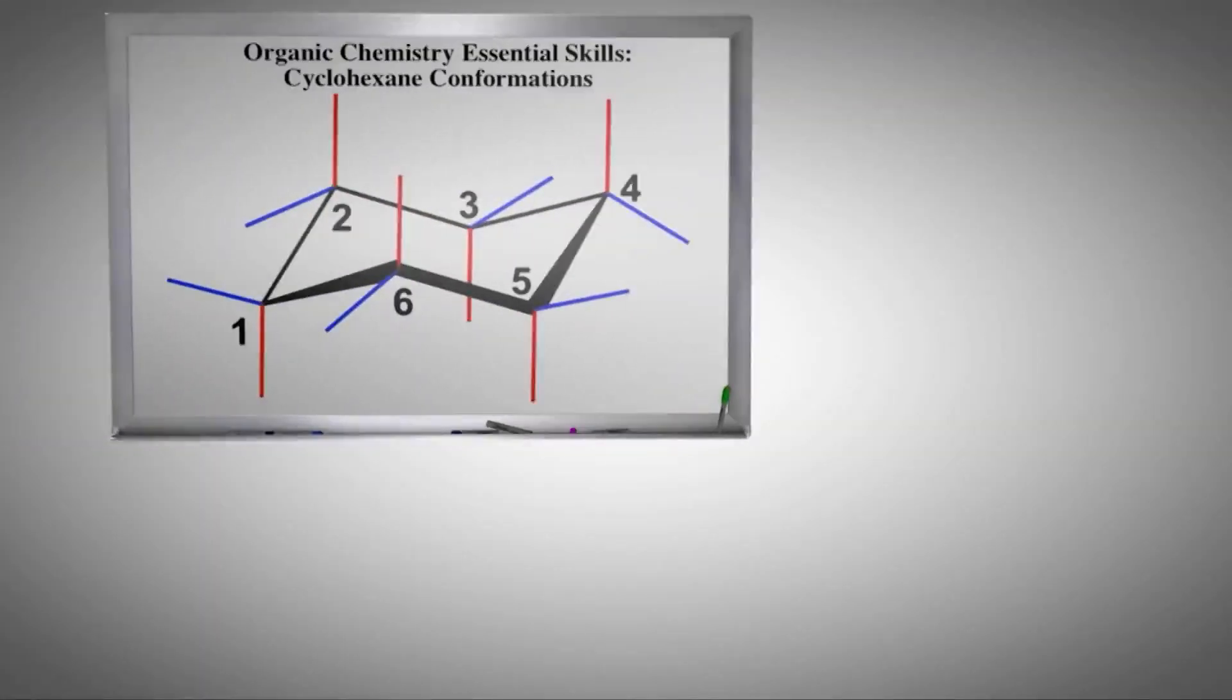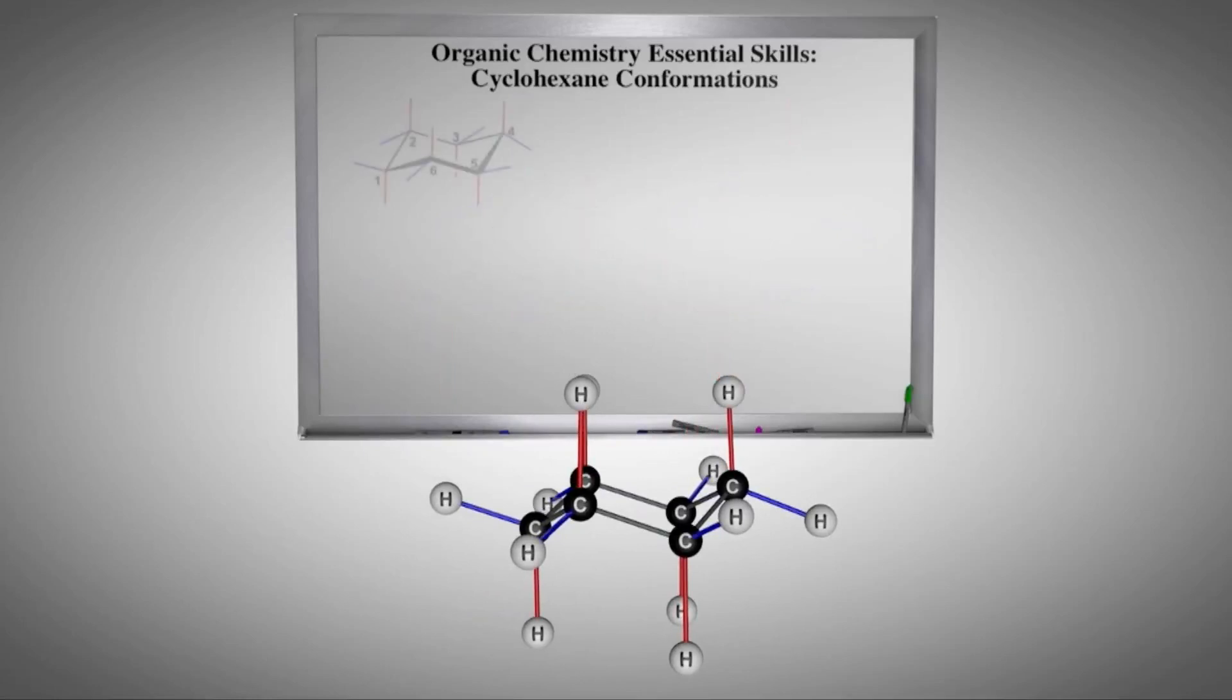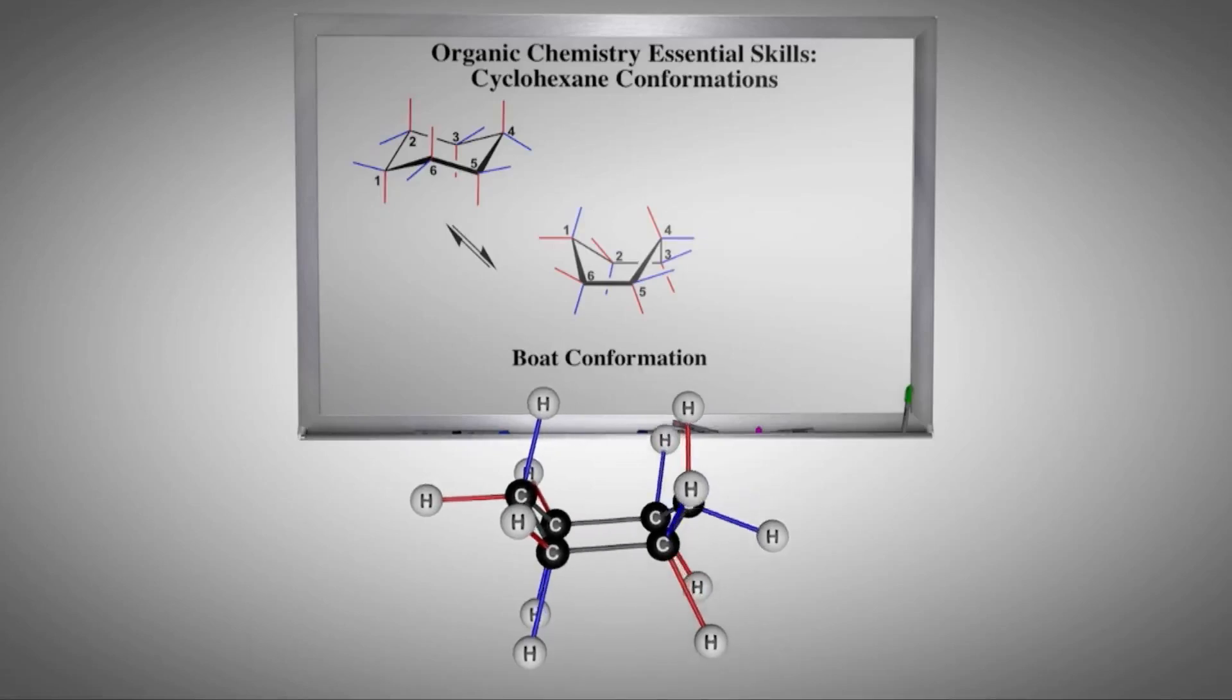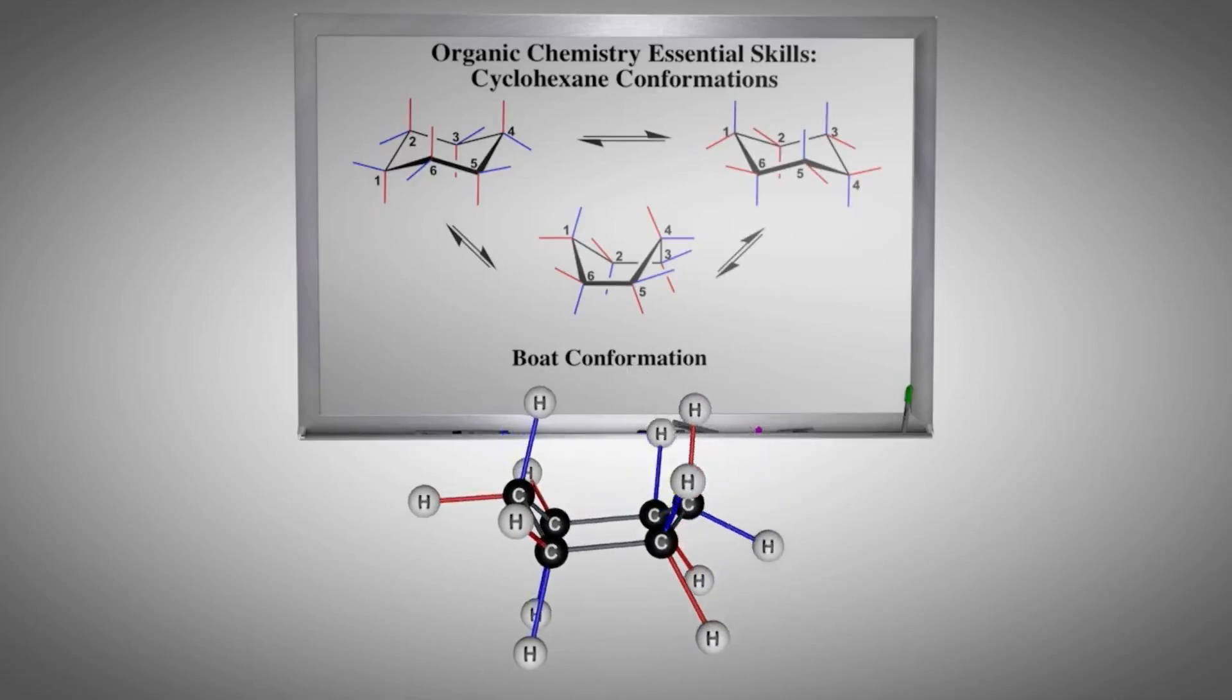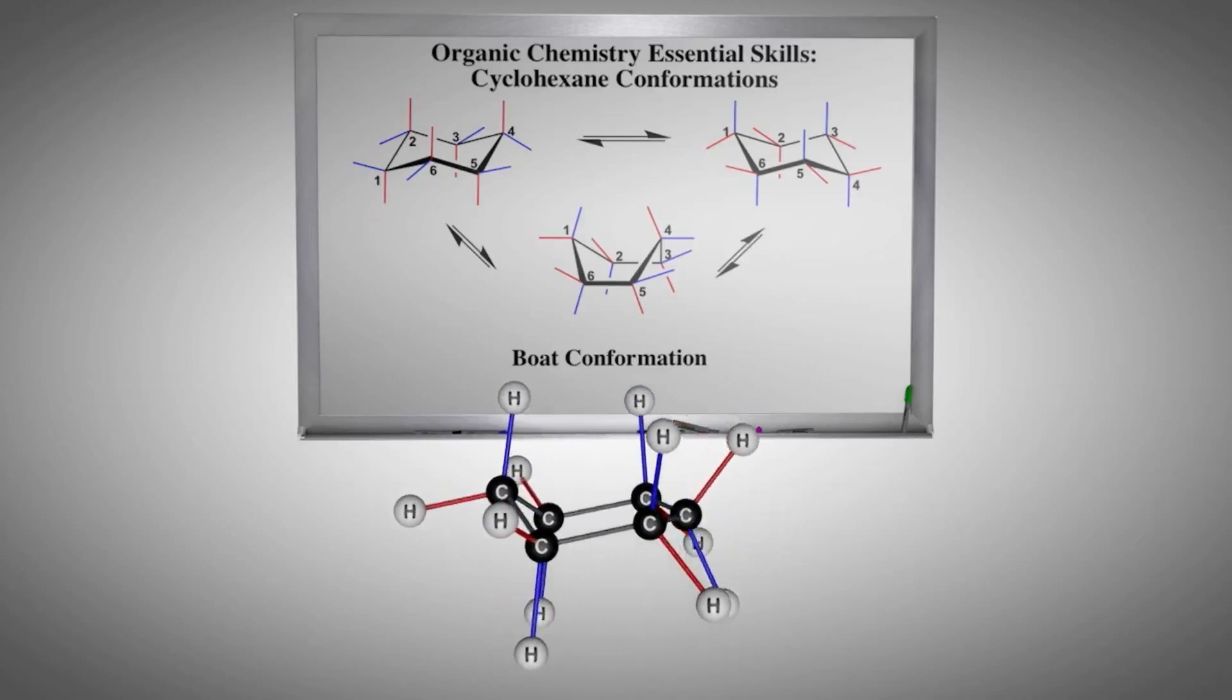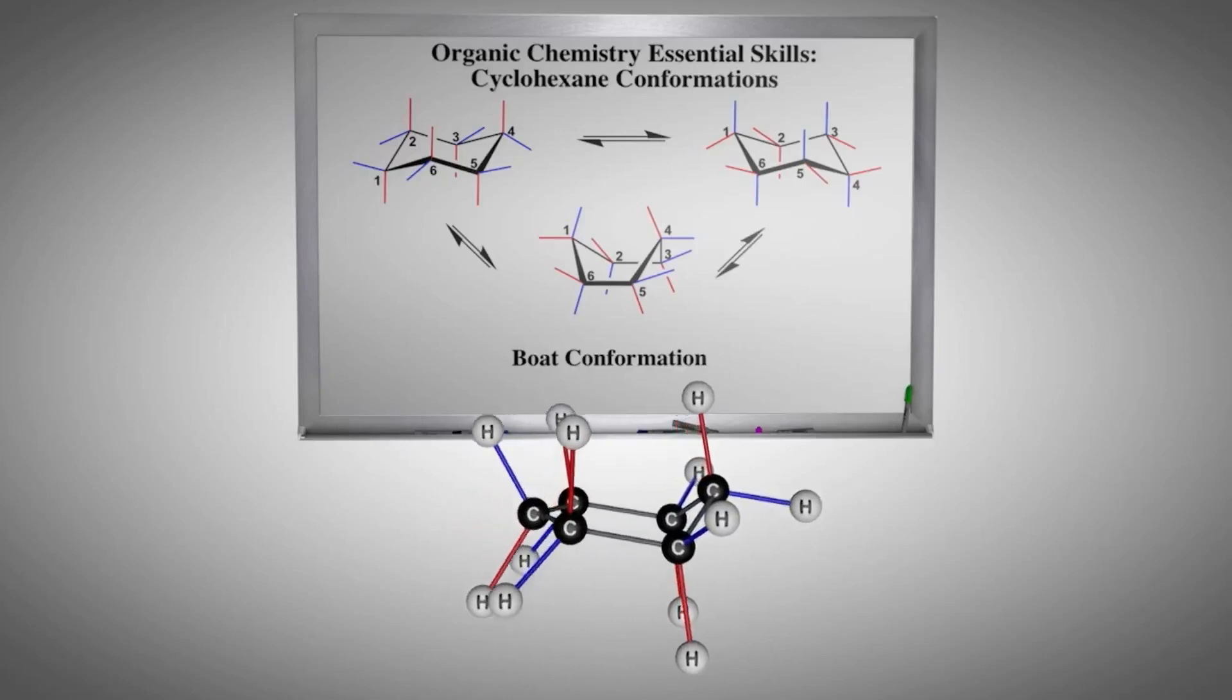All molecules are in constant motion, and the chair conformation of cyclohexane is no different. Here we see the chair convert to a boat conformation and then to the other chair. Your instructor will often call these conformational changes chair inversion or chair flip.